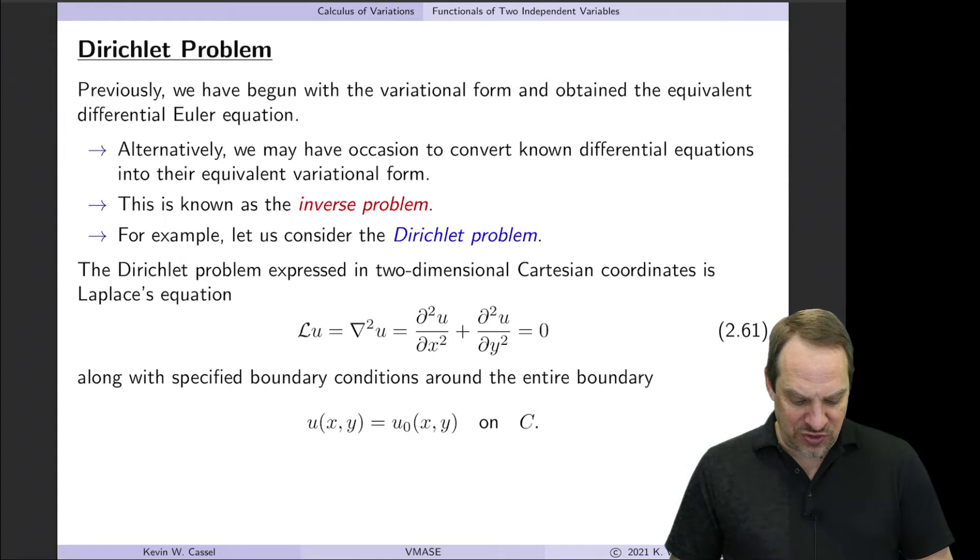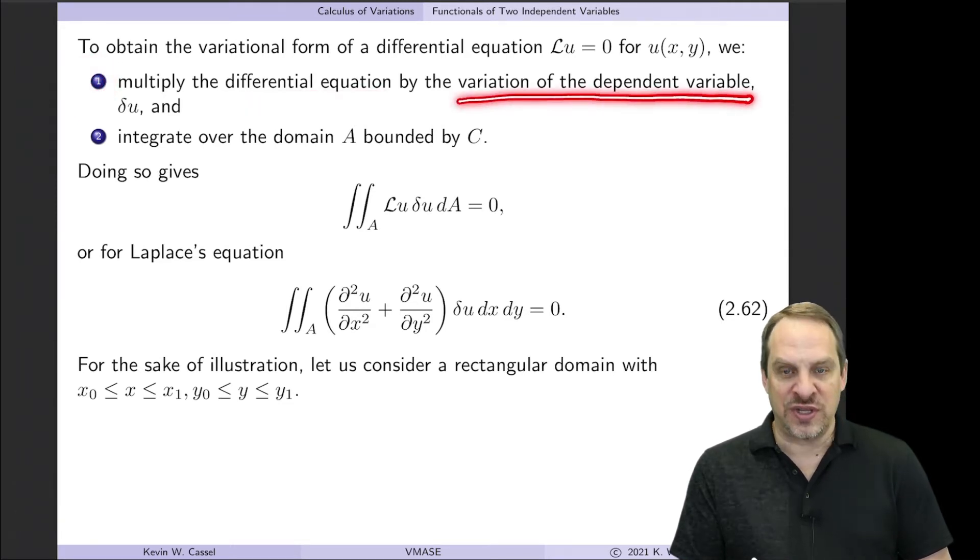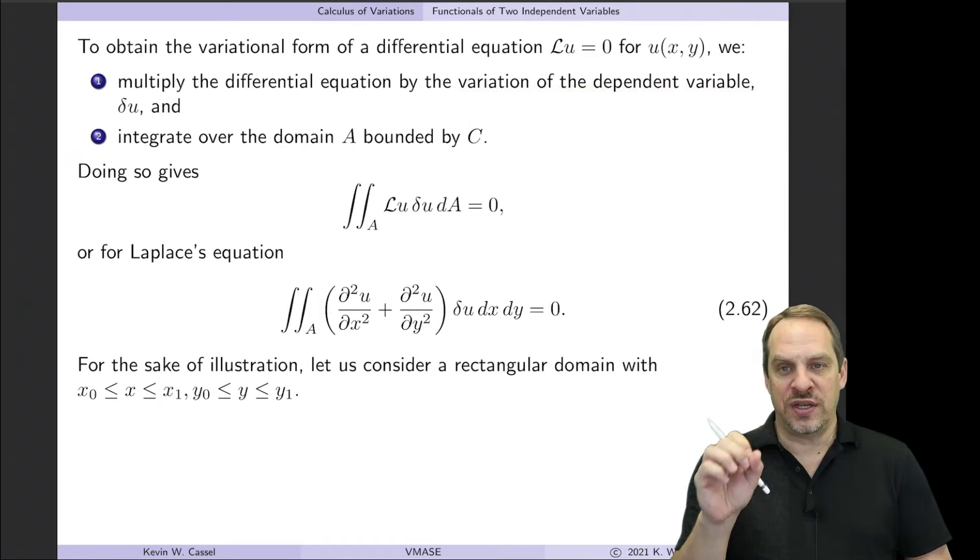So how do we turn this, the differential form or the strong form, into its equivalent variational or weak form? So we do two things. The first is we're going to multiply our differential equation by the variation of the dependent variable. So in this case, that's delta U.